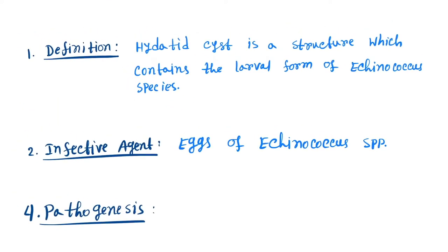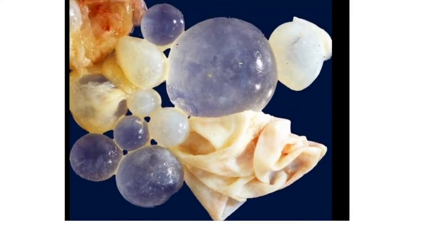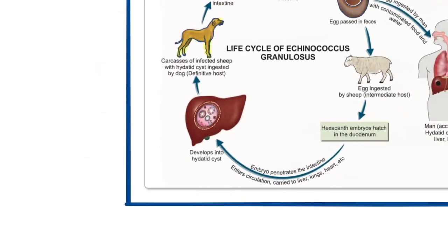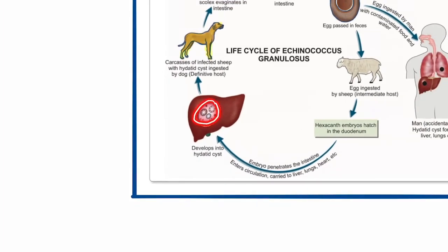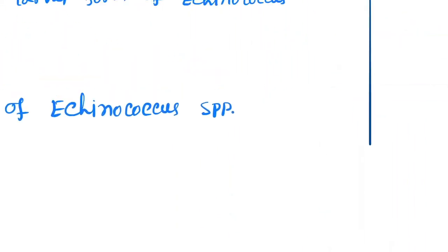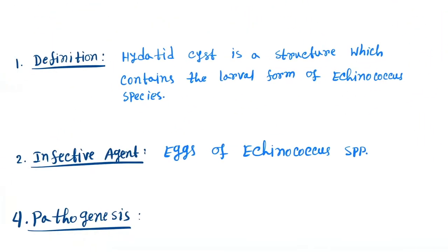As you can see in this picture, this is the hydatid cyst and this contains the larval stage, that is the daughter cyst larval stage of the Echinococcus species. Next is the infective agent.